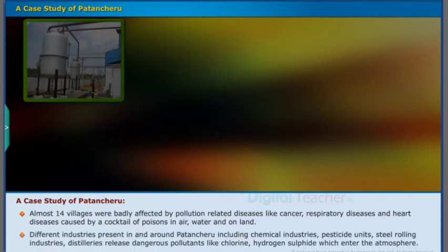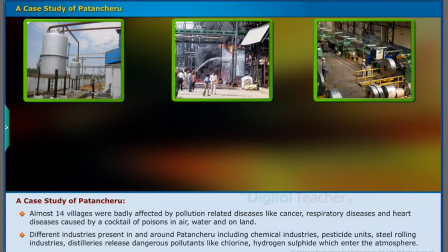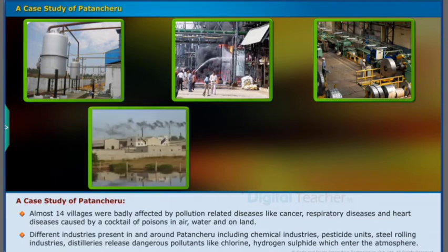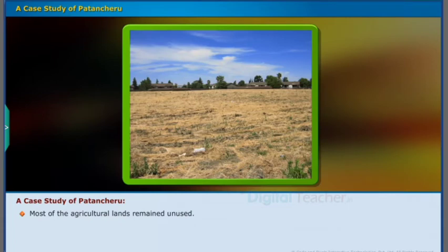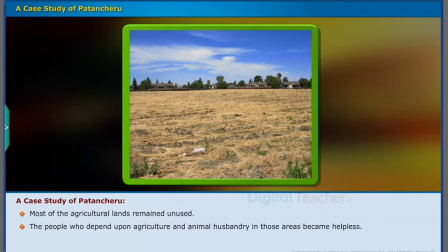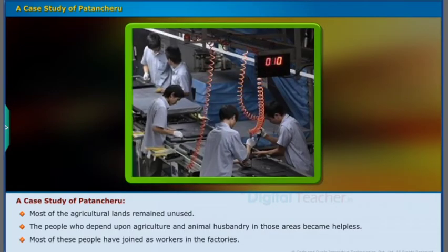Different industries present in and around Patancheru, including chemical industries, pesticide units, steel rolling industries, and distilleries, release dangerous pollutants like chlorine and hydrogen sulfide which enter the atmosphere. Most of the agricultural lands remain unused. The people who depend upon agriculture and animal husbandry in those areas became helpless, and most of them have joined as workers in the factories.